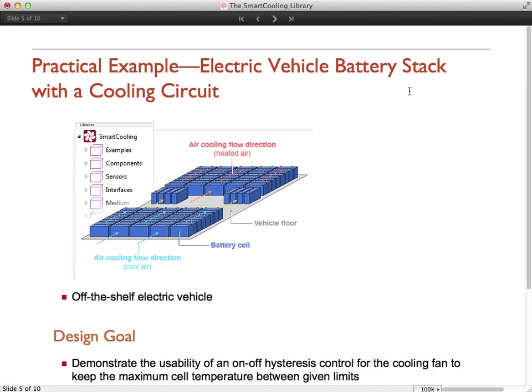We'll look at a practical example, an electrical vehicle battery. In order to increase the range of an electrical vehicle, there are basically two different strategies. Increase the battery size or reduce the energy consumption. For example, by reducing the energy consumption of the auxiliary components. That's what we'll look at in this example.